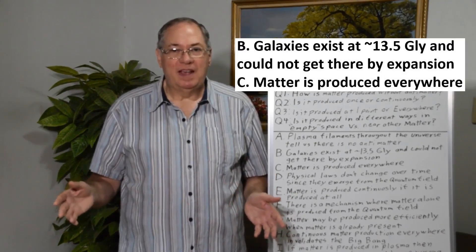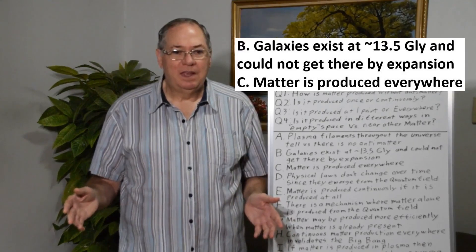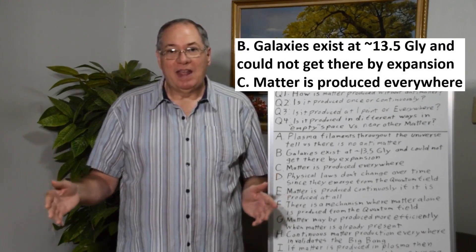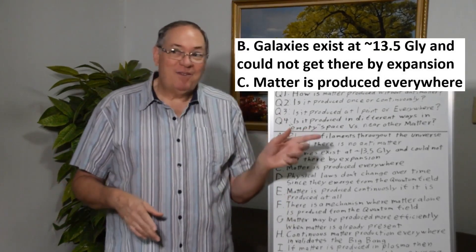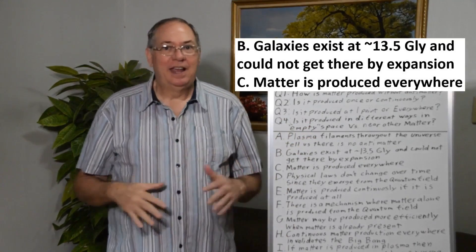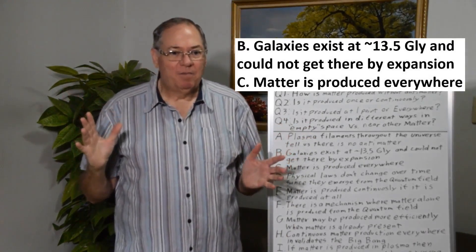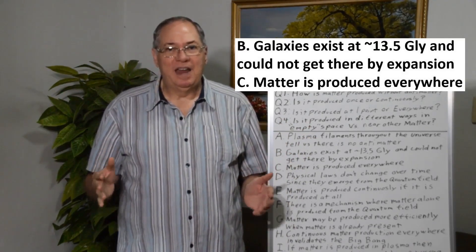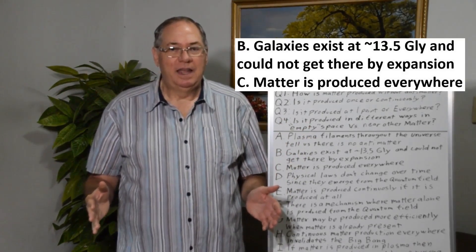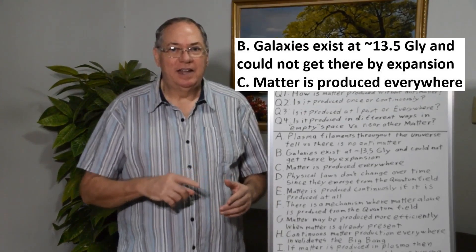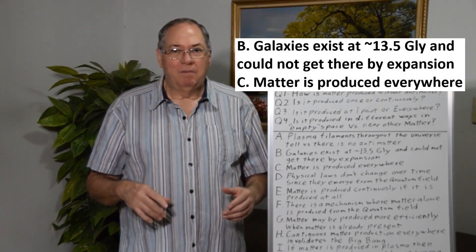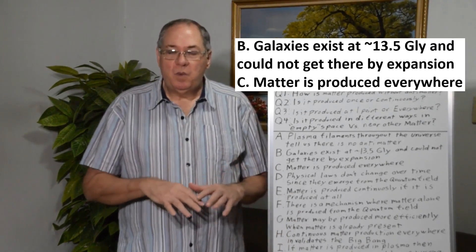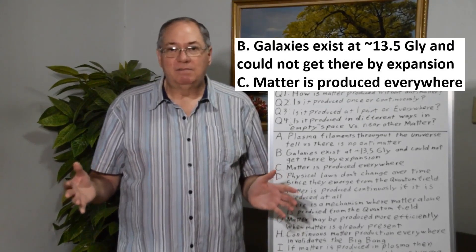Matter doesn't move faster than light. So matter was produced 13.5 billion years that way, and that way, and that way, every which way. And the only way for that to occur is matter was produced everywhere. It wasn't a singularity event at one point, which would have formed a black hole anyway. So we have to have production everywhere.